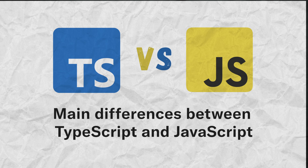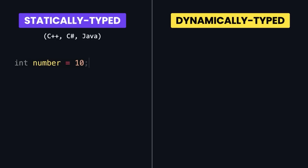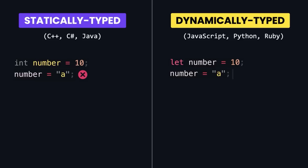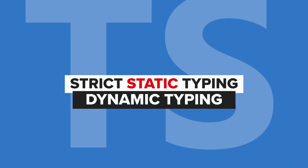Both languages are pretty similar, so what's the main difference between them? JavaScript is a dynamic programming language, while TypeScript is static — and that's the main thing that differs one from another. JavaScript is dynamically typed, while TypeScript is a statically typed upgraded version of JS. This means it allows both strict static typing and dynamic typing. This makes TypeScript code safer, but it can also be a bit more challenging to write.